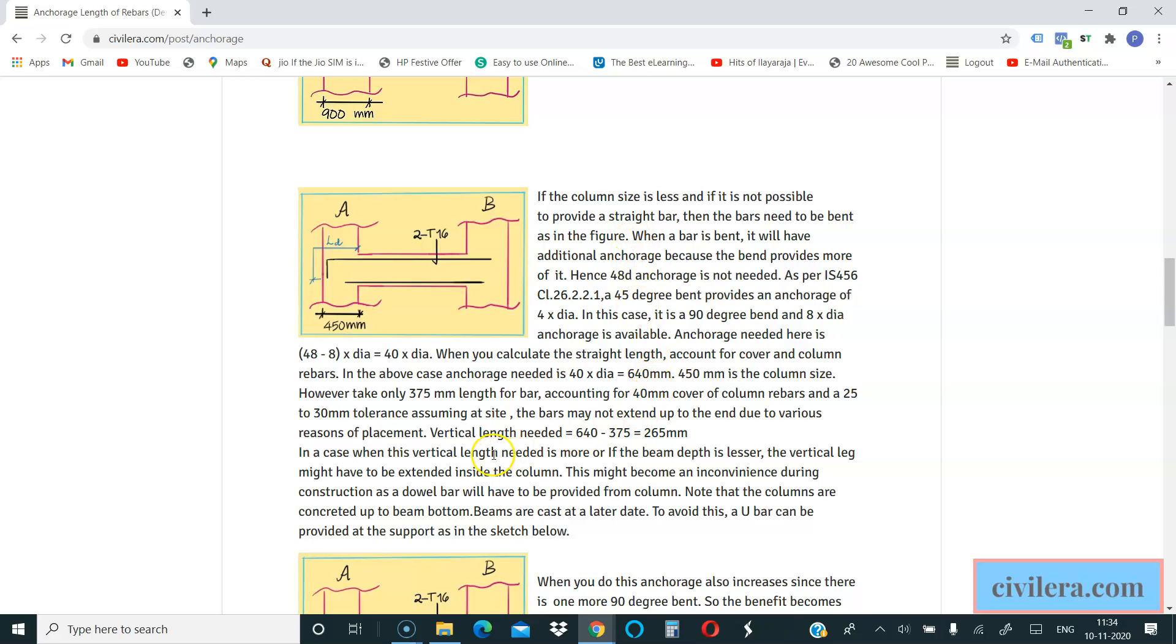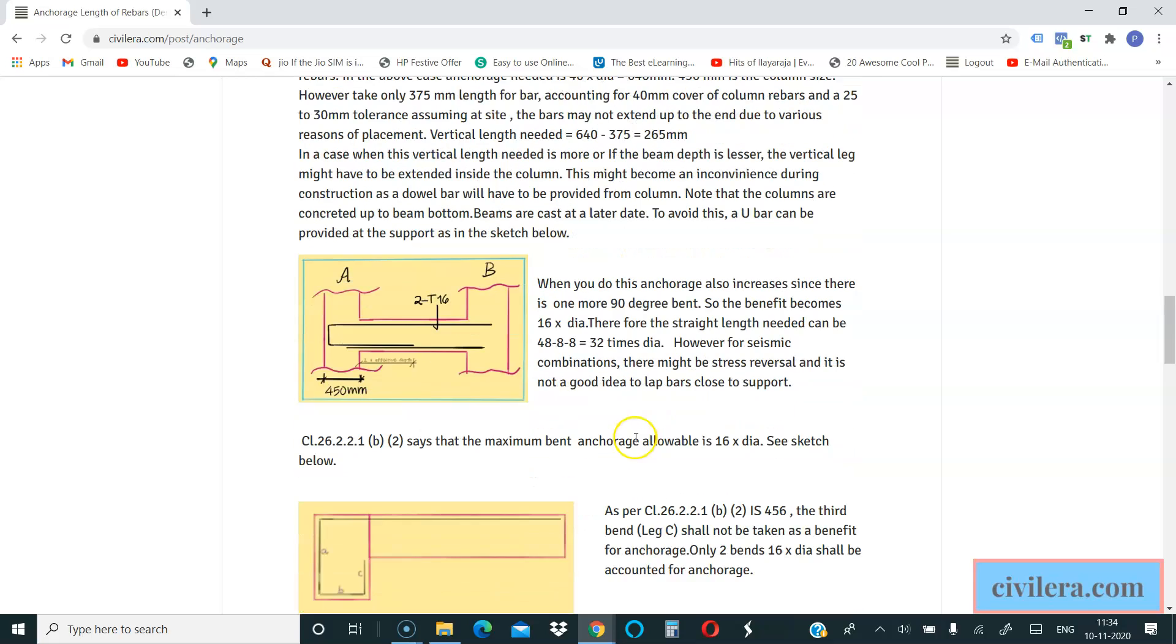Now many times if your beams are shallower and if you are not achieving it because of the construction sequence, you generally would want to have your concreting done up to the bottom of the beam, and when you do that you may have to leave a double bars from the columns. Now leaving a double bars from the column for the beams is not so great. So if you want to avoid that, you can use a U bar.